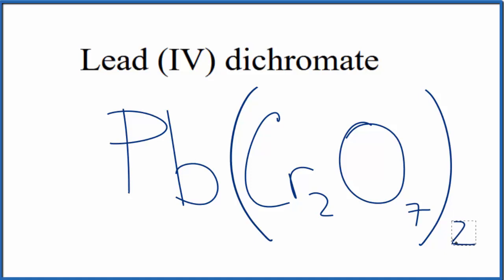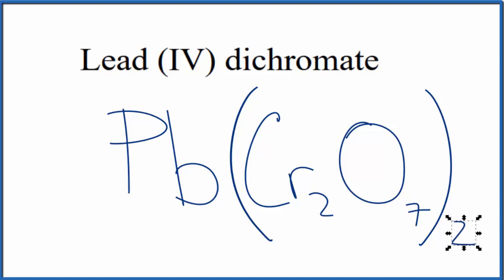This is the formula for lead(IV) dichromate: Pb(Cr2O7)2. Note we have 2 of these dichromate ions. This is Dr. B — thanks for watching.